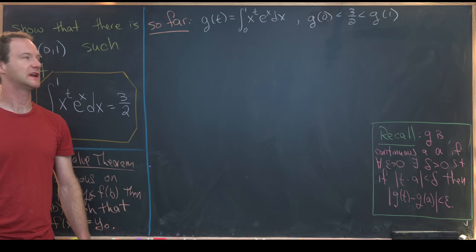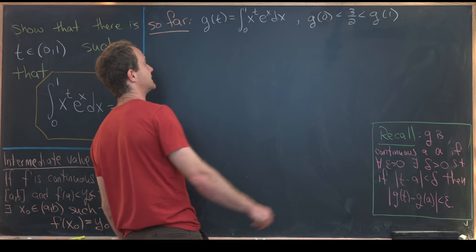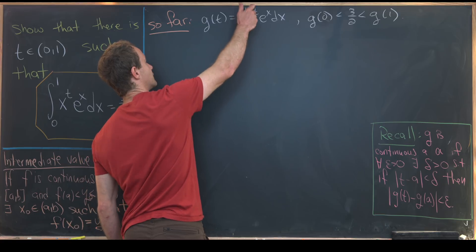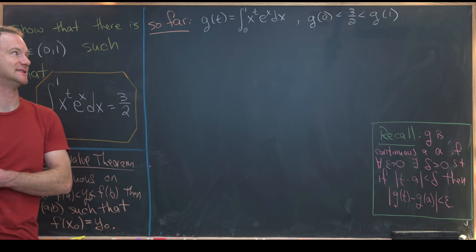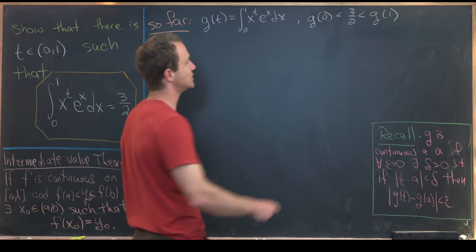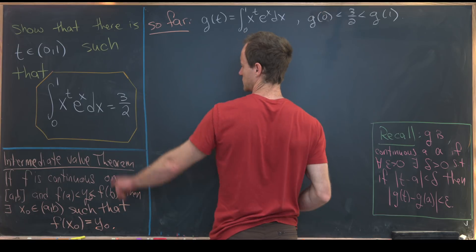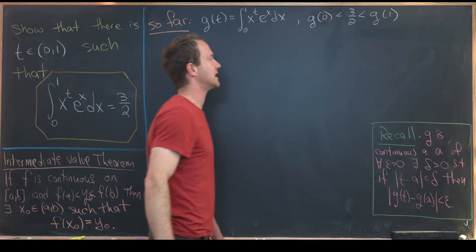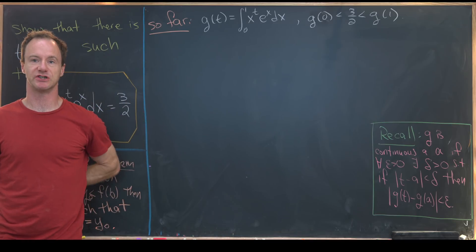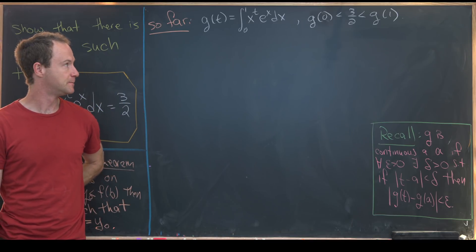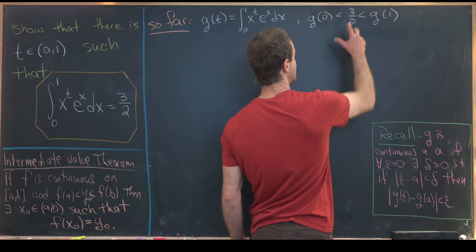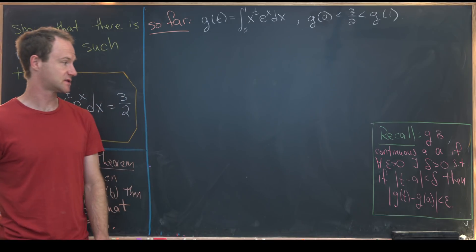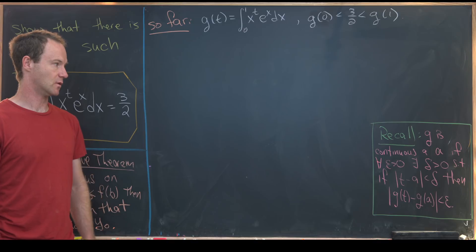To reiterate what we did on the last board, we defined g of t to be the function defined by the integral from zero to one of x to the t e to the x dx. Then we showed that three halves, which was kind of our goal number over here, lied strictly between g evaluated at zero and g evaluated at one. So next we want to show that g is continuous on the interval zero to one.